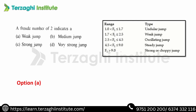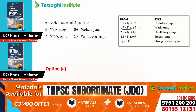A Froude number of 2 indicates a weak hydraulic jump. The classification ranges are: Froude number 1 to 1.7 is an undular jump; 1.7 to 2.5 is a weak jump; 2.5 to 4.5 is an oscillating jump; 4.5 to 9 is a steady jump; more than 9 is a strong or choppy jump. Froude number 2 falls in the range 1.7 to 2.5, so the answer is weak jump.